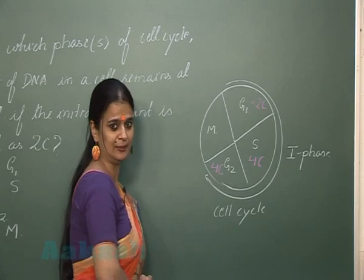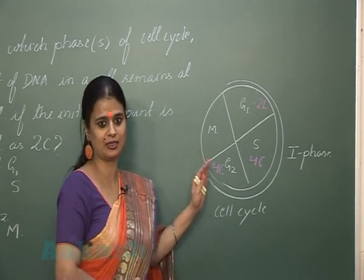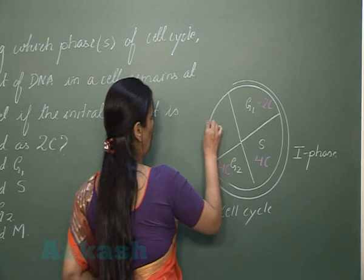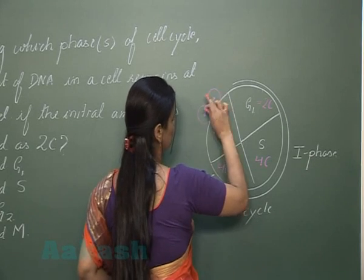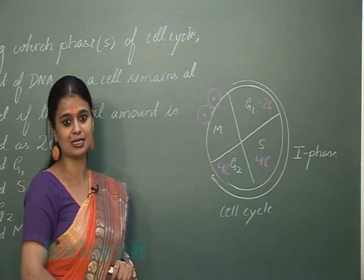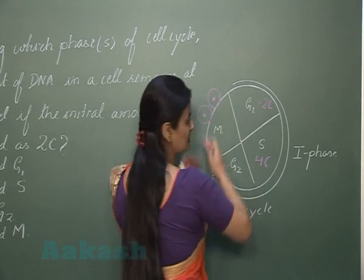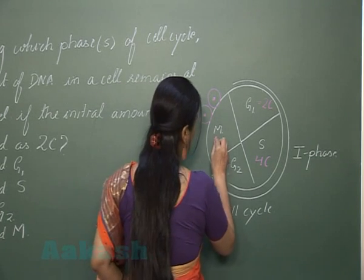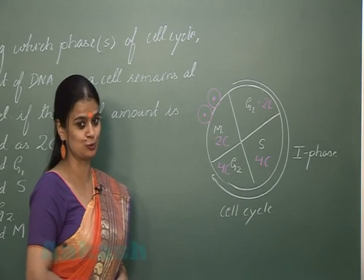Now once the interphase is over, the cell is ready for division, so it will enter M phase. In the M phase, one parent cell is divided into two daughter cells. If mitosis occurs, one parent cell is divided into two daughter cells, so the amount of DNA in two daughter cells is reduced to half. So instead of 4C, the DNA content which is present in each daughter cell is 2C.